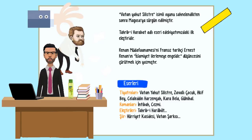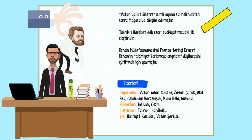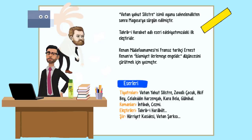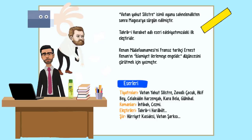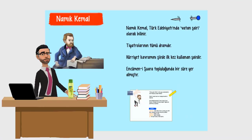Namık Kemal'in eserleri — Tiyatroları: Vatan yahut Silistre, Zavallı Çocuk, Akif Bey, Celaleddin Harzemşah, Karabela, Gülnihal. Romanları: İntibah, Cezmi. Eleştirileri: Tahrib-i Harabat. Şiir: Hürriyet Kasidesi, Vatan Şarkısı.